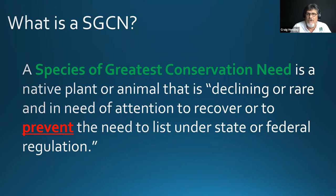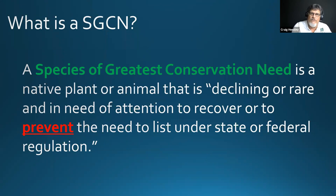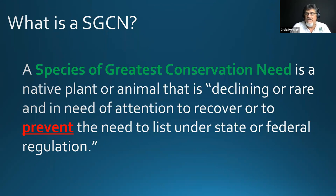In your area, the classic example is the golden-cheeked warbler — a very controversial but beautiful bird. The golden-cheeked warbler is a Texas native; this is the only place in the world where this bird exists. What we do to the landscape here directly influences how successful that bird is going forward. The bald eagle used to be a threatened species across the country, but in Texas it's now been delisted because of good conservation practices. Most recently, the black-capped vireo in the Balcones area has also been delisted — its population has recovered based on good conservation.